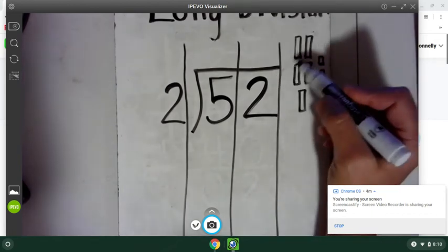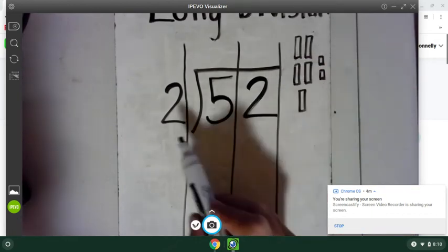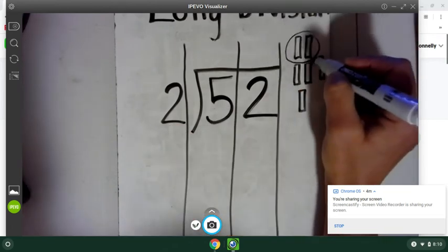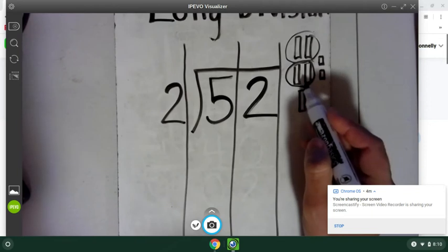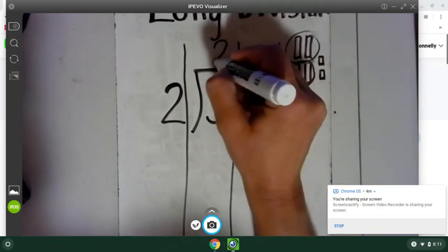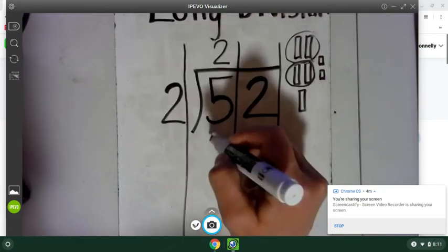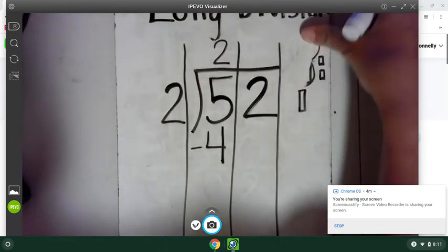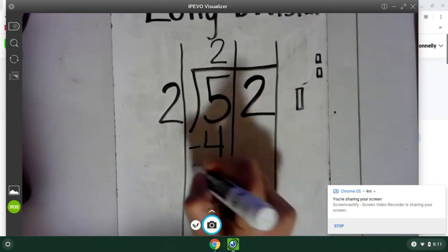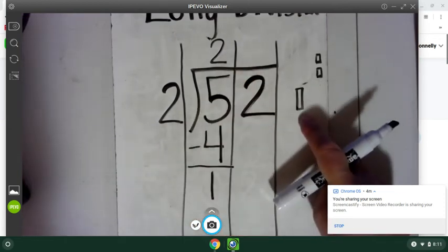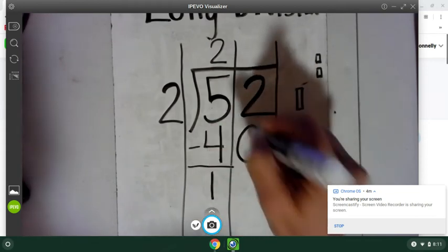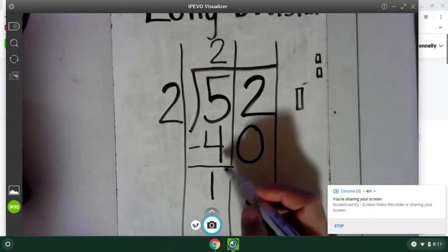So now let's look. If I have five of these tens cubes, and I want to make groups of two, I can make two of them. So two groups of two is four. I'm going to take that away because I use those up, and there's one of these left.